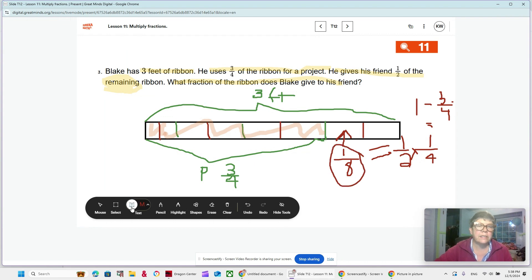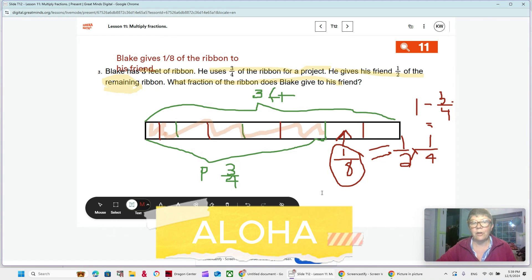And we do need to write it in a sentence because we answer our word problems with words. So, Blake gives one-eighth of the ribbon to his friend. And we totally didn't need to know that it was three feet long or anything like that. That's just thrown in there to confuse you. Sorry, I'm trying to move it, but it's not moving very well. So, there you go. Please make sure you wrote your answer down. Pause me if you need me. Rewind me if you need me. I'm here to help you. And I really appreciate your hard work.